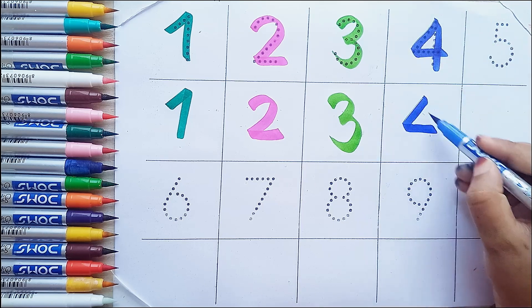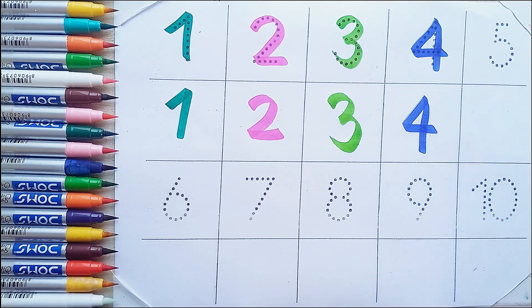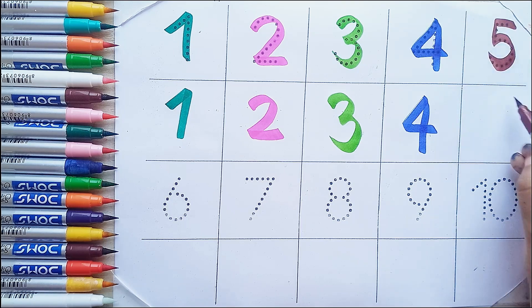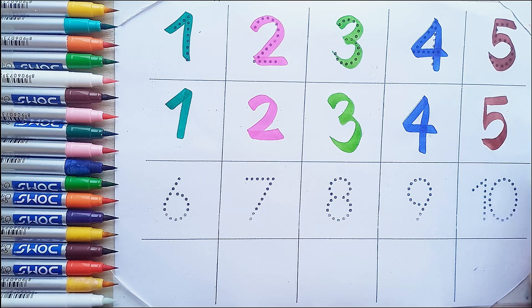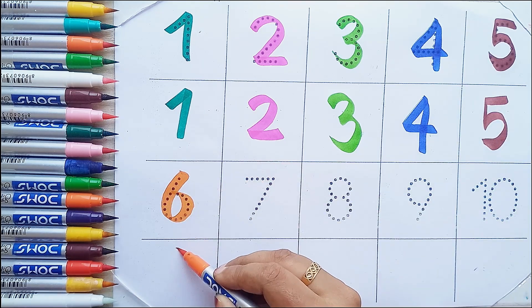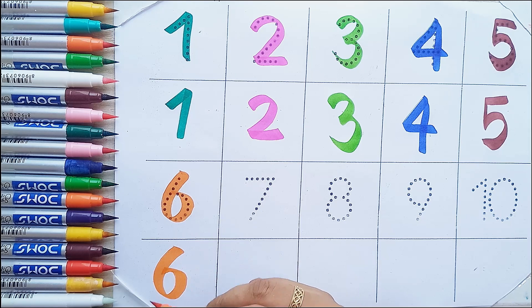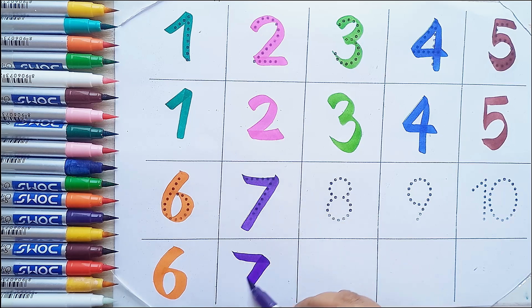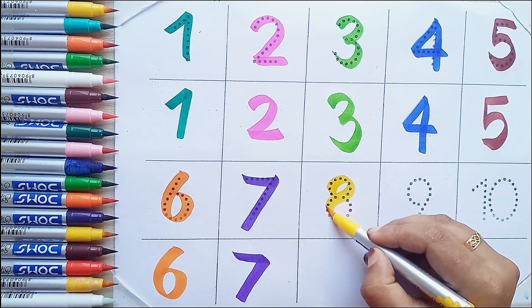Blue color 4. F, O, U, R. 4. Brown color 5. F, I, V, E. 5. Orange color 6. S, I, X. 6. Violet color 7. S, E, V, E, N. 7.